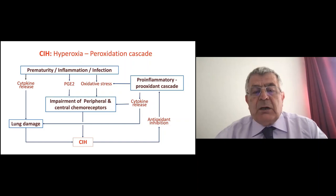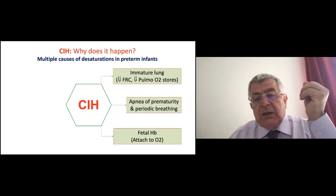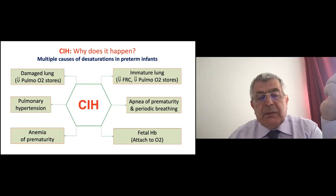Immature babies have small lungs, small functional residual capacity, and small oxygen stores. They have apnea of prematurity and fetal hemoglobin. On top of that, we damage their lungs. Chronic lung disease further reduces pulmonary oxygen stores and is associated with pulmonary hypertension and often anemia. So there are many contributing factors.